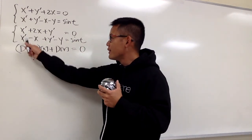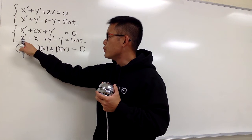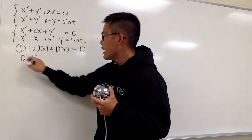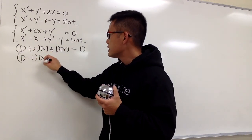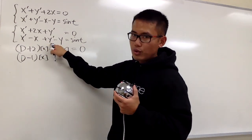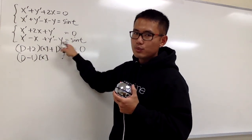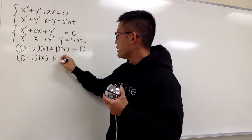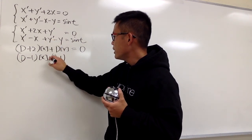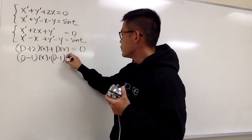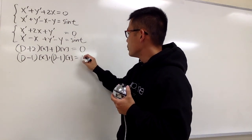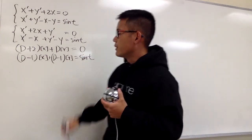And now for the second equation, we will have D minus 1 with x. And then this right here is also a derivative and then minus 1, so it's D minus 1 as well, and this is a plus in between. And this is with the y, and we have this equal to sin t.